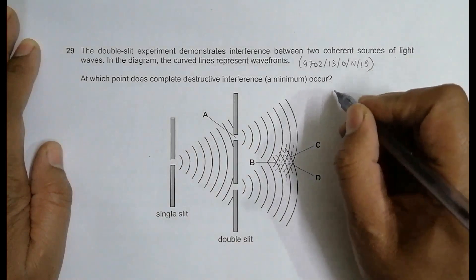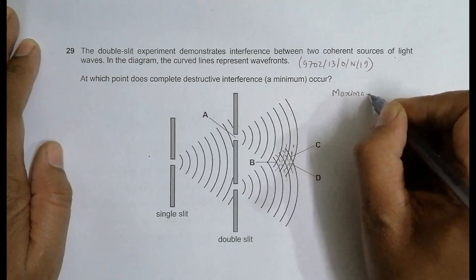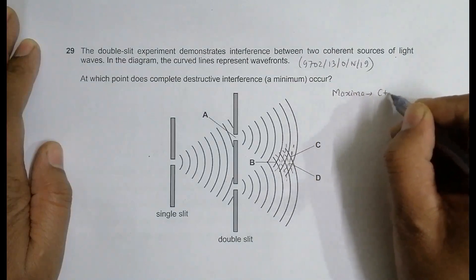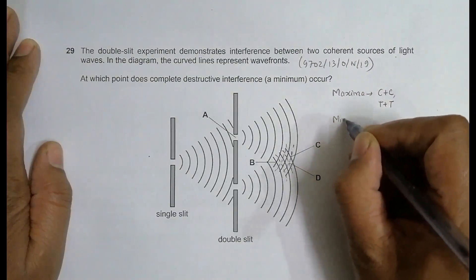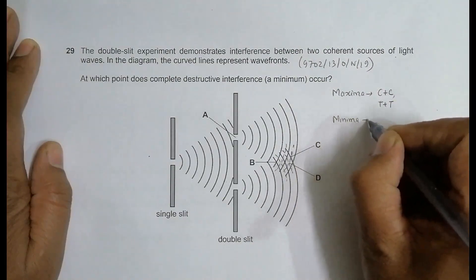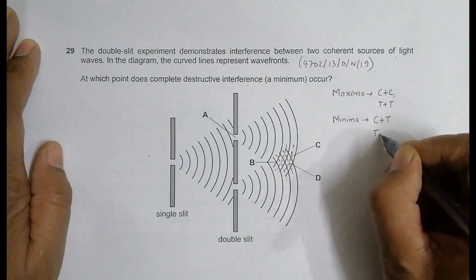Maxima occurs where crest adds up with crest or trough adds up with trough. Minima occurs where crest adds up to trough or vice versa, trough adds up to crest.